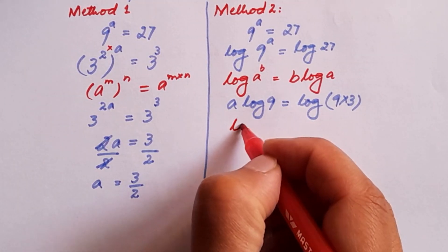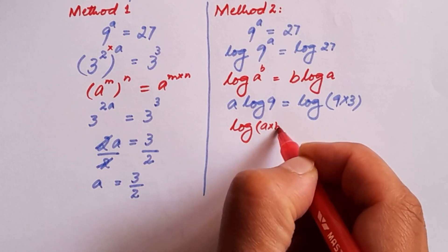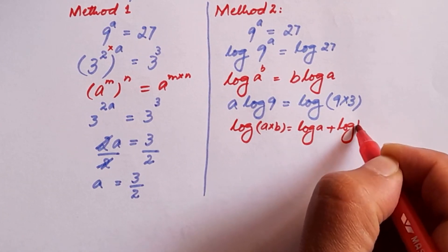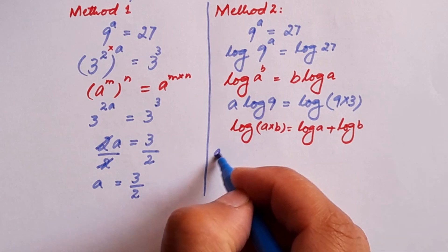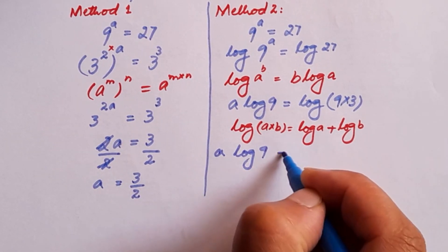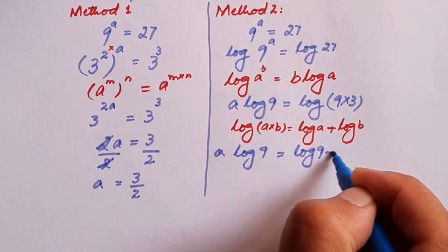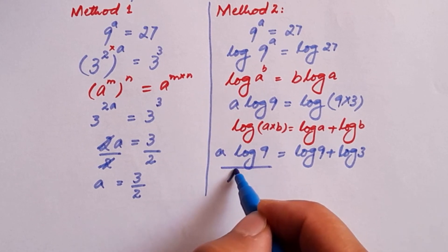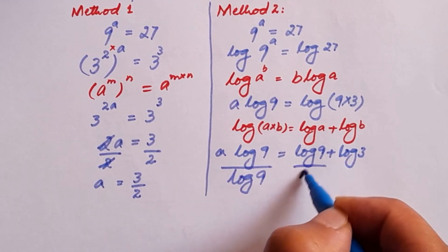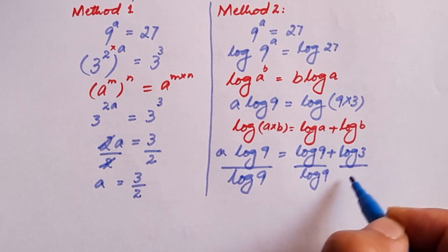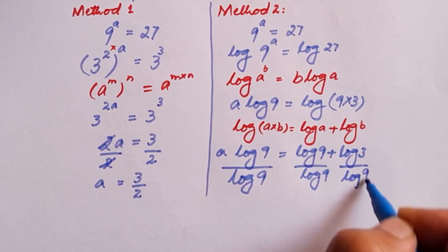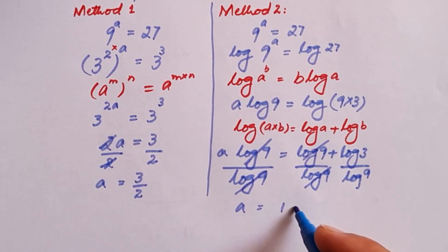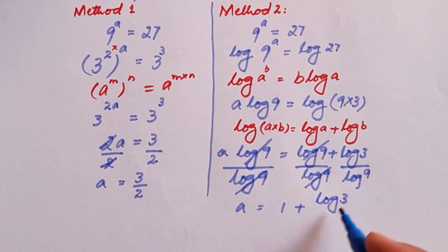We apply another log rule: log of a times b equals log a plus log b. So the right-hand side becomes log 9 plus log 3. We then divide both sides of the equation by log 9. The log 9 on the left cancels, leaving a equal to 1 plus log 3 divided by log 9.